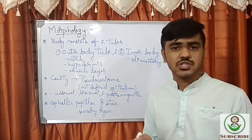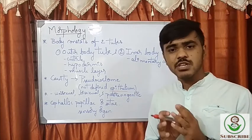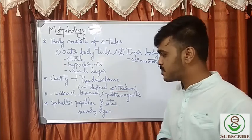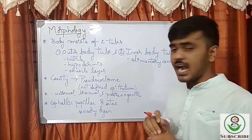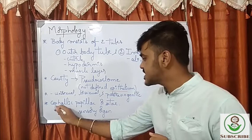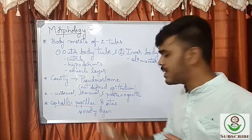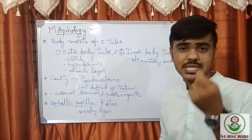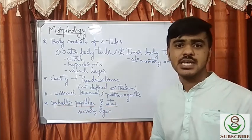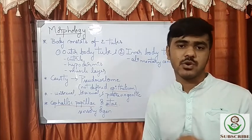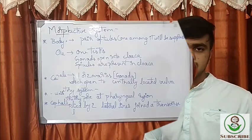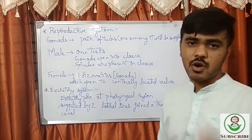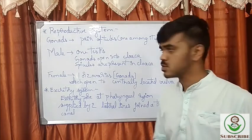Nematodes can be unisexual or bisexual, and even parthenogenetic mode of reproduction takes place. The sensory organ is the cephalic papilla or setae — they have structures called setae that serve as sensory organs in nematodes.